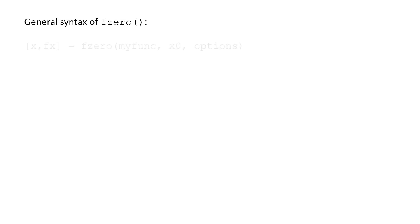The general syntax for the fzero function is as follows. fzero has three arguments: myfunc, x0, and options. The output of the function is assigned to variables x and fx.